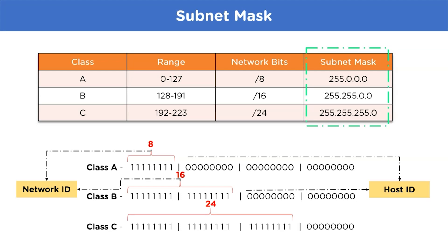For Class B we have 16 bits for network ID and the remaining for host ID, meaning Class B can assign network IDs for a medium-level company. And lastly for Class C we have 24 bits as network ID and the remaining for host ID, meaning only smaller companies can use Class C.